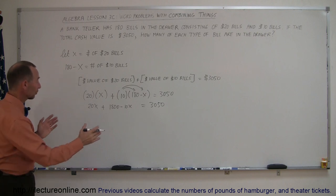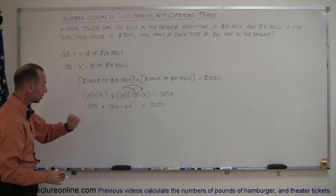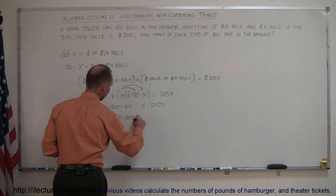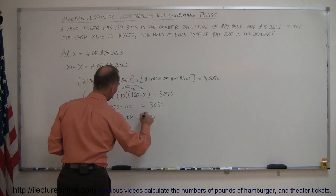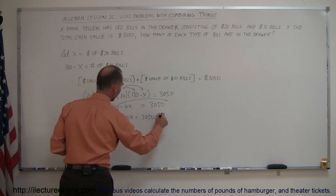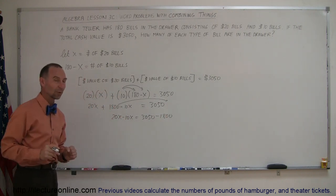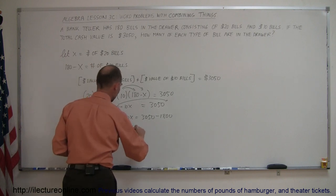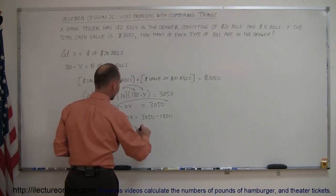Now the next step is to move all the terms of the x to one side, all the numbers to the other side. So we have 20x minus 10x on the left side equals $3,050. And when we move the $1,800 across, minus $1,800, because the sign changes when we cross the equal sign. And so on the left side, we end up with 10x equals, on the right side, that would be $1,250.